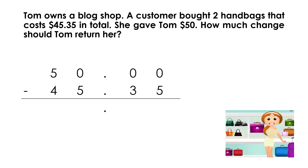Therefore, we need to borrow from the $5.10 by putting a slash. Now, we write 4 as the remaining $10 value and one $10 is carried forward to the dollar position. Next, we need to borrow from the dollar position by putting a slash. Now, we write 9 as the remaining dollar value and one dollar is carried forward to the $0.10 position.